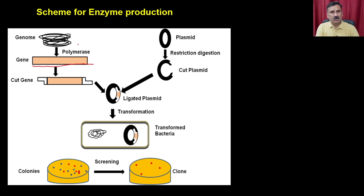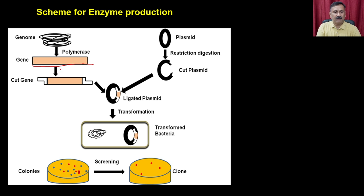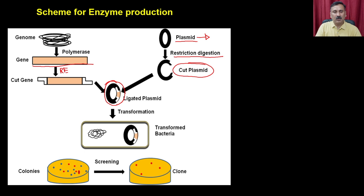This is the scheme for enzyme production. We already discussed many aspects: isolating the gene fragment from the genome using the genomic library approach, the cDNA approach, or PCR. Once you have the sequence, you perform restriction digestion to get sticky ends — same for the vectors, using a plasmid as a bacterial vector example. Then you do the ligation reaction to get the recombinant clone, which must be delivered into a suitable host for protein production.